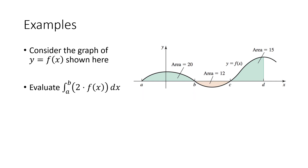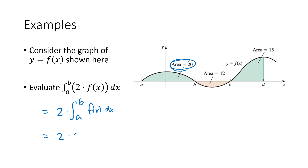For the integral from a to b of 2 times f of x: one of our properties says that's just 2 times the integral from a to b of f of x. The integral from a to b is 20, and 2 times 20 equals 40.